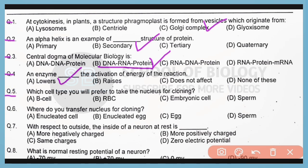Question 5. Which cell type would you prefer to take the nucleus from for cloning? Correct answer is option C. An embryonic cell is best for taking the nucleus for cloning.